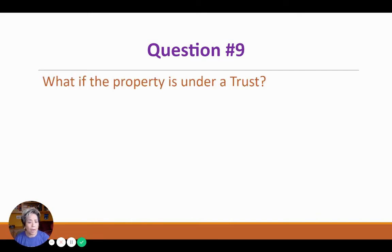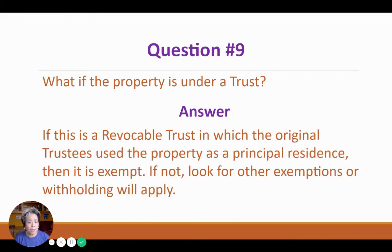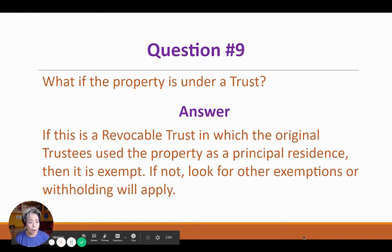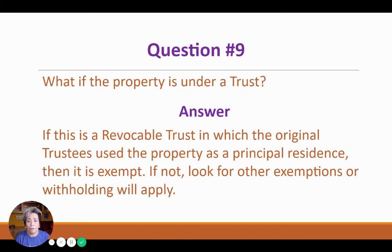Question number nine: What if the property is under a trust? If this is a revocable trust in which the original trustee used the property as a principal residence, then it is exempt. If not, then you must look for other exemptions to the withholding that could apply to you.